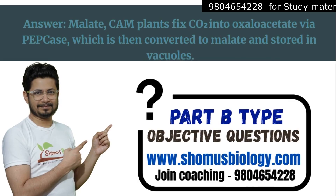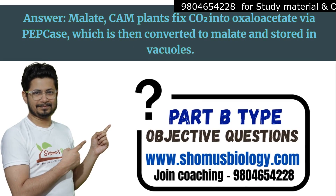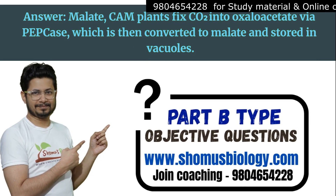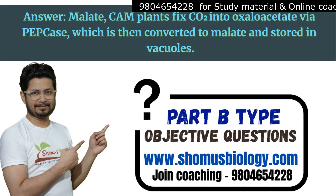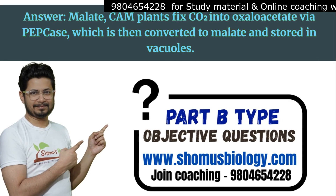Answer: Malate. CAM plants fix CO2 into oxaloacetate via PEP carboxylase, which is then converted to malate and stored in vacuoles.